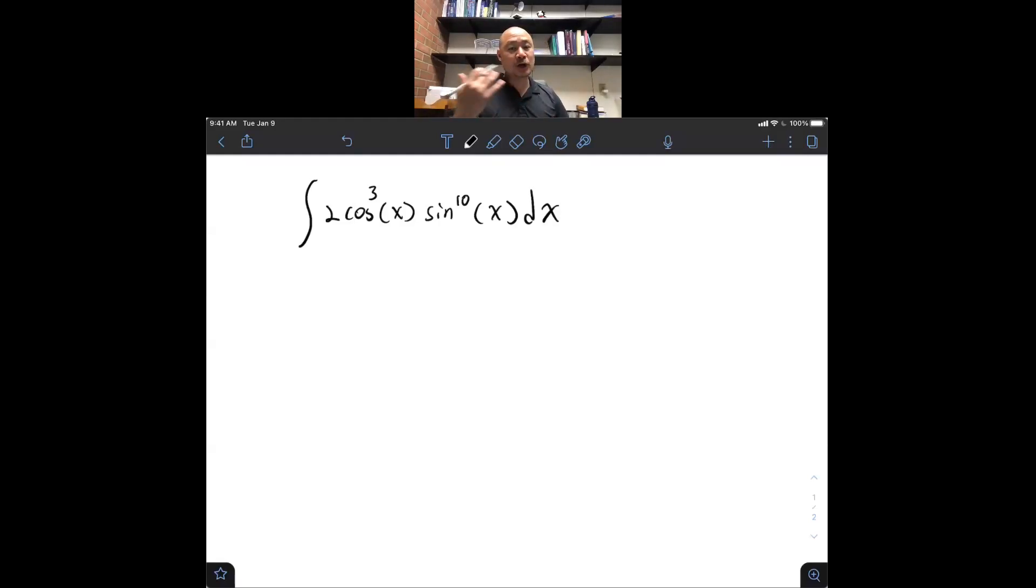But, what we do know is that we can substitute cosines for sines or vice versa in pairs via Pythagorean identity. And so, I just need either one cosine or one sine to serve as du. And since there are an odd number of cosines, I'm going to let that be what's going to be du.